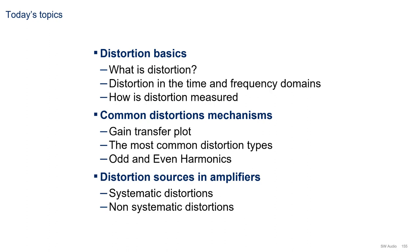Then we will discuss the most common distortion mechanisms. We will go over the gain-transverse plot, look into the most common distortion types, and understand the significance of odd and even harmonics. Finally, we will look into the distortion sources in amplifiers, covering systematic distortions and non-systematic distortions.